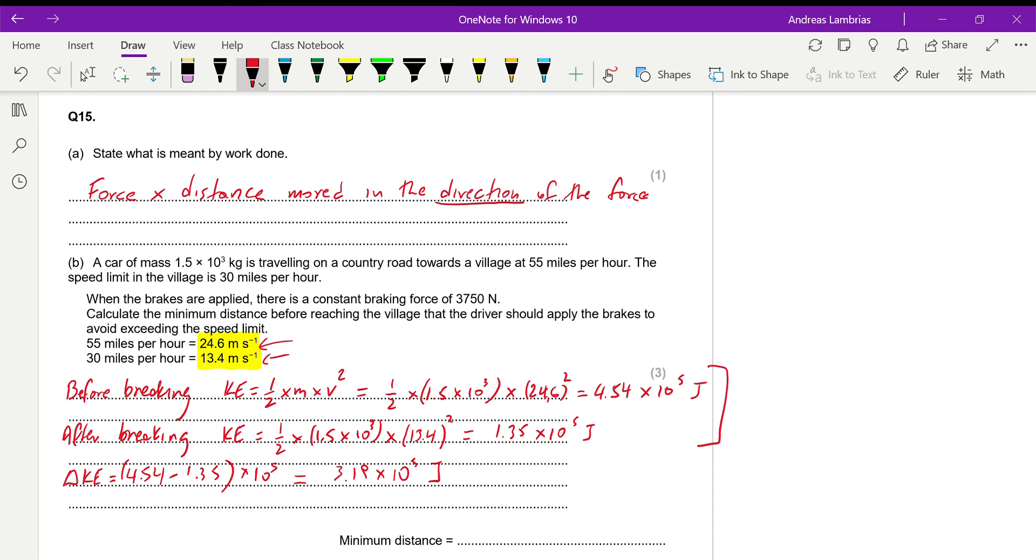And what would be the equivalent distance that will give us a work of this amount? I will just write it on this side. So we know that work done equals force times distance. Now, the work done, we want it to be that. And the braking force is 3,750. So we're trying to find the distance. We'll be dividing both sides by 3,750. And the distance we get, the distance that the braking force should be applied to give us this work, is calculated to be 85.1 meters. Thank you so much.